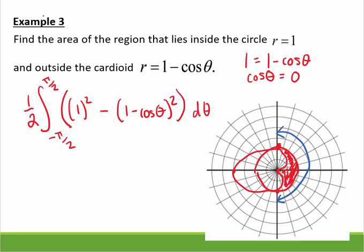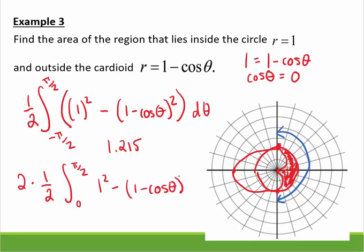What you could also do, and well, let me get you an answer to this. This ends up being, where's my answer, 1.215. What you could also do is you could also do symmetry. Twice, one half, from 0 to π/2 of that 1 squared minus (1 - cos θ)² dθ. And again, I'm typing these in my calculator. So keep that in mind.